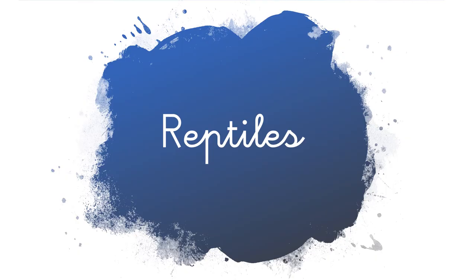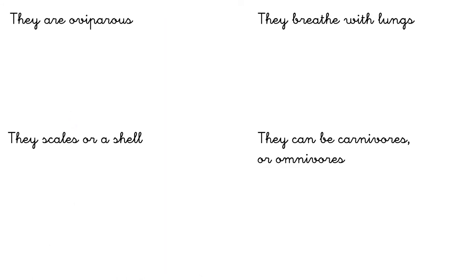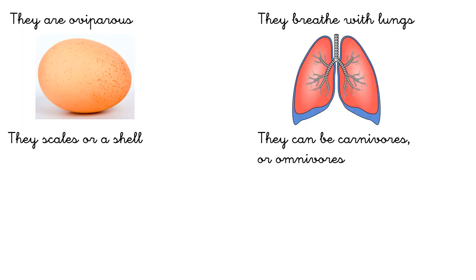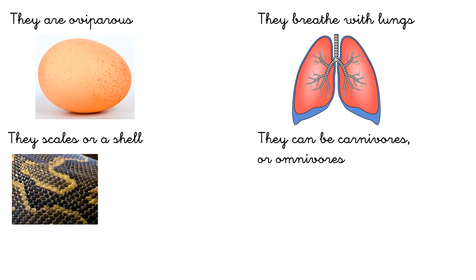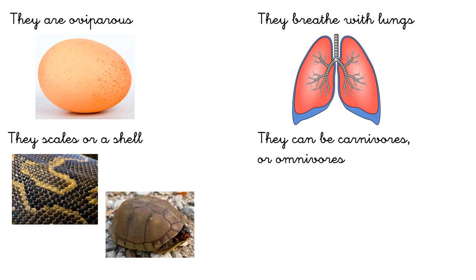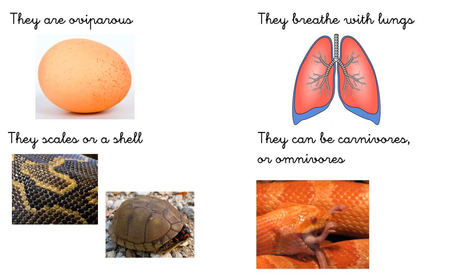Now we are going to see the reptiles. Reptiles are oviparous, it means that they are born from an egg. They breathe with lungs, and they have scales or a shell.